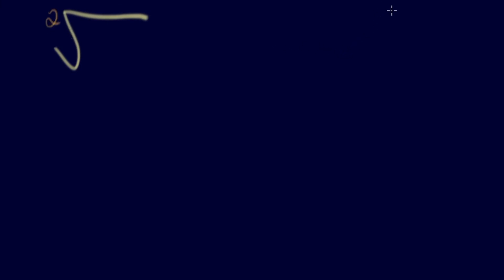We're talking about radicals today, and we're going to be looking at how to simplify radicals with numbers and variables in the radicand. A quick review: here is our radical symbol, and we have the index, which by default is 2 for square roots. We also have stuff that goes inside the square root, which we call the radicand. Before, we looked at things like the square root of 9, but now we're going to add in variables — like x squared.